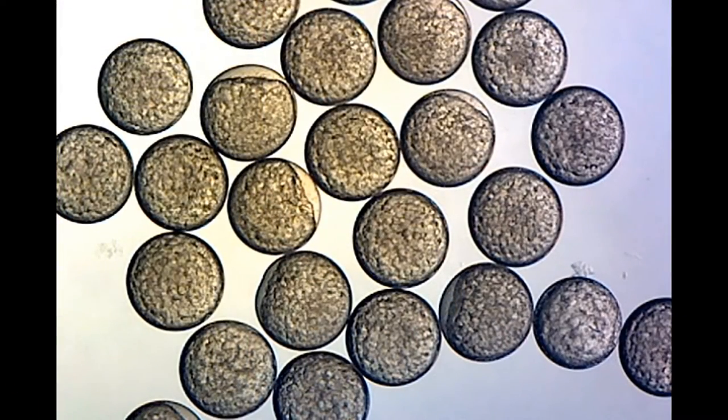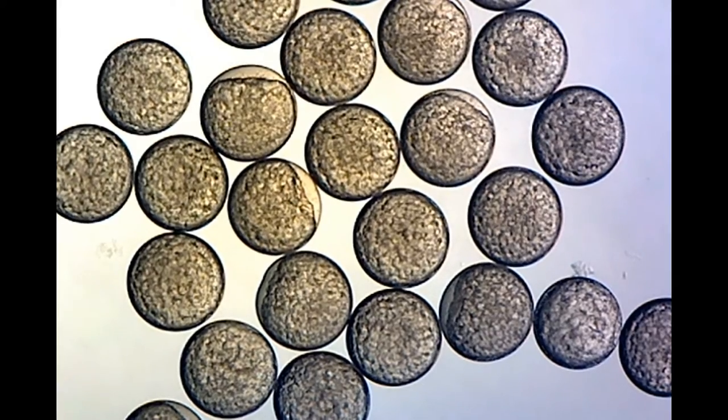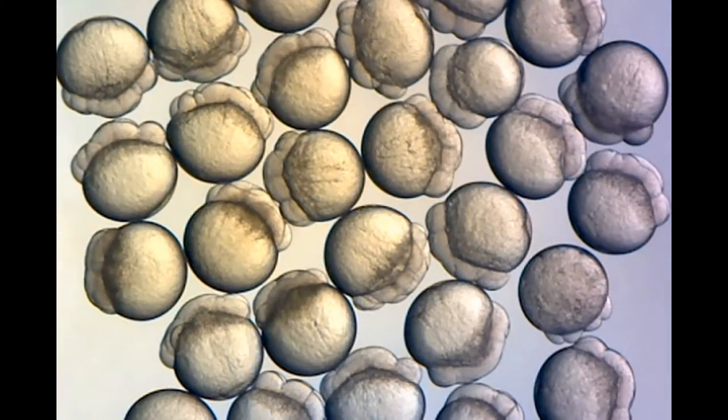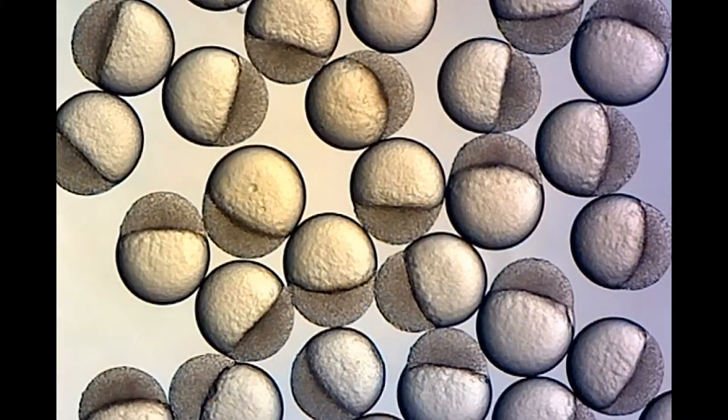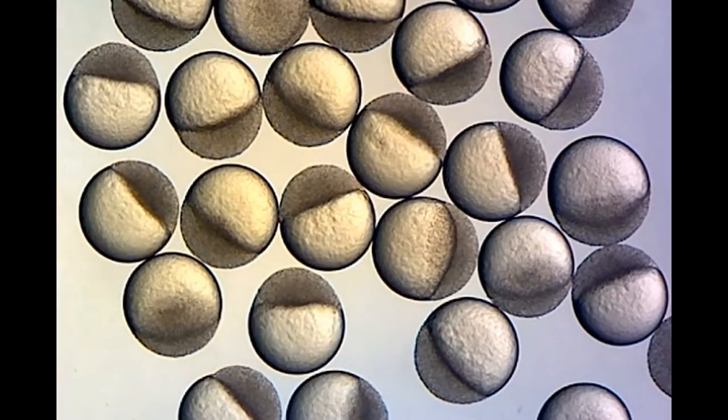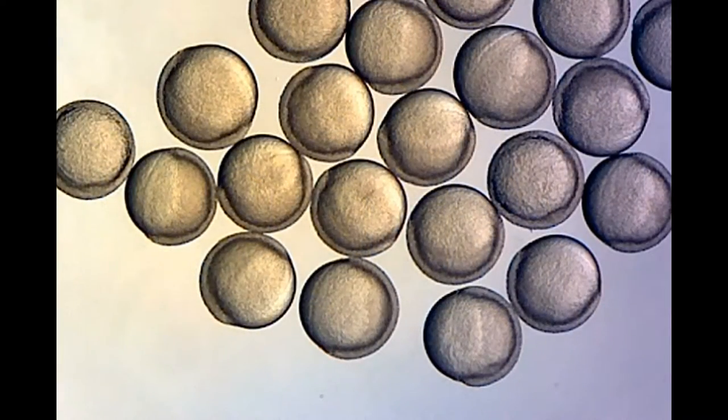We all started life as a single cell, just like these zebrafish embryos. Somehow, during the process of embryogenesis, a single cell gives rise to many cells that make up different tissue types like skin, heart, and brain.